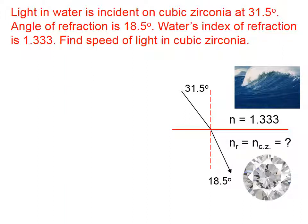And the question is, what's the speed of light in cubic zirconia? Well, to find that, we need to first figure out what the index of refraction of cubic zirconia is. So let's use Snell's law.